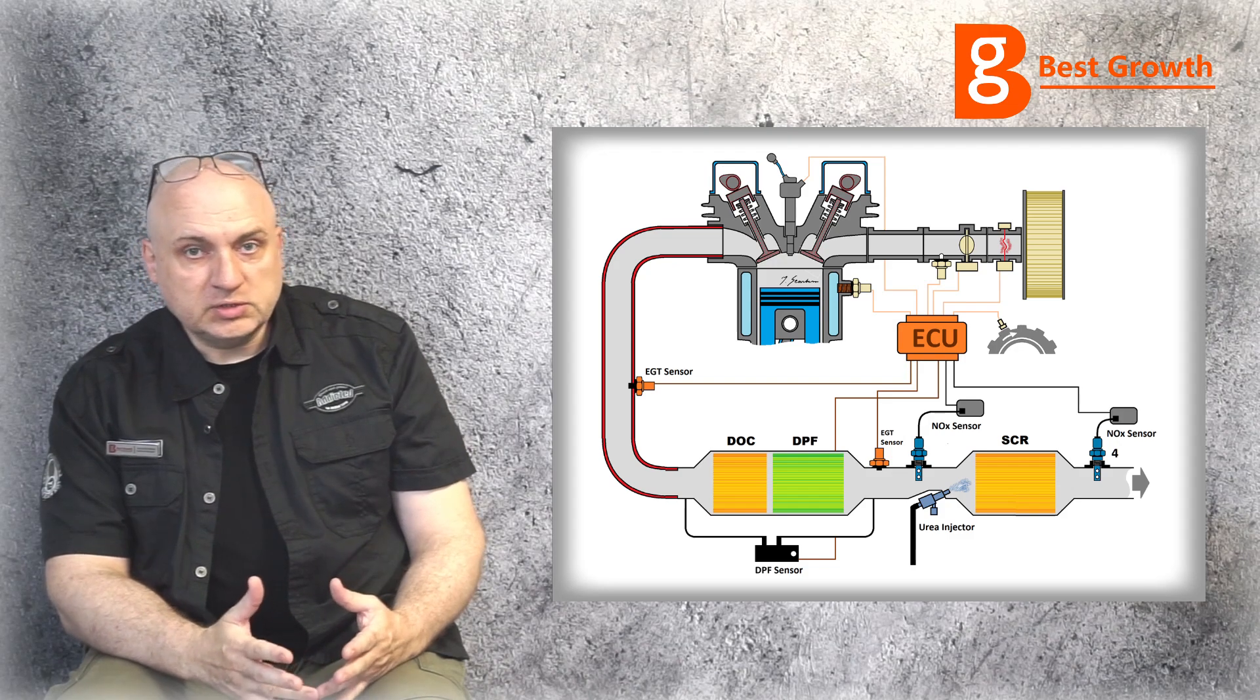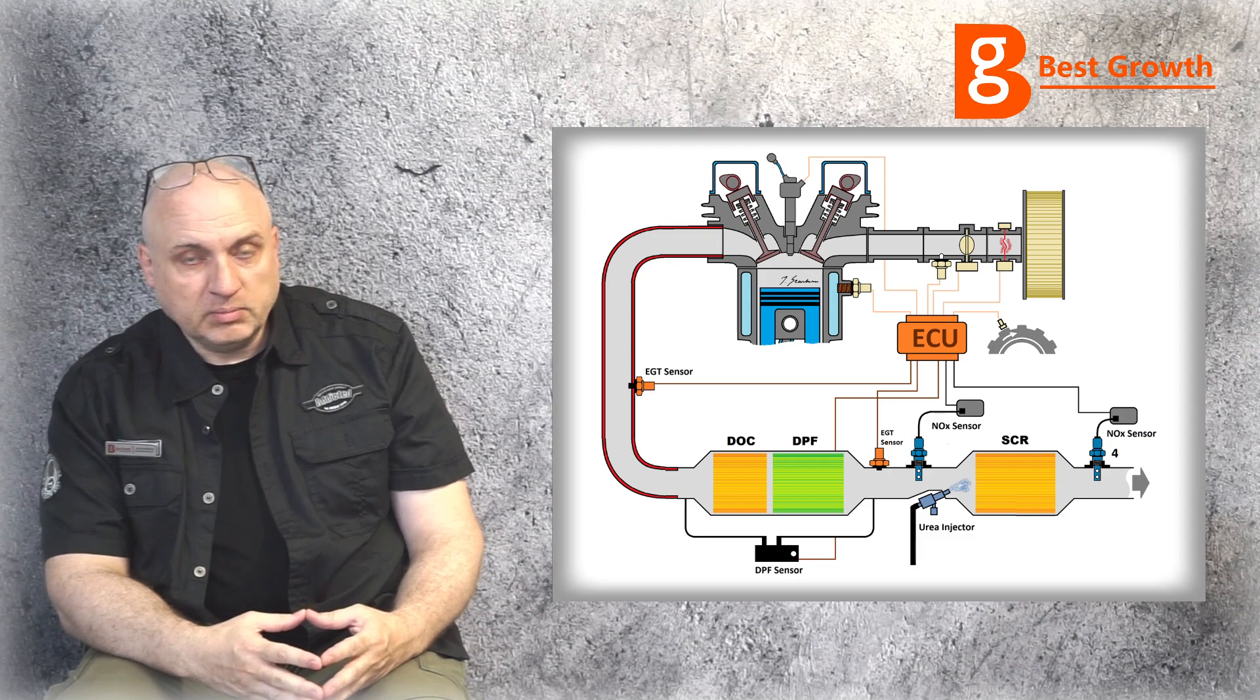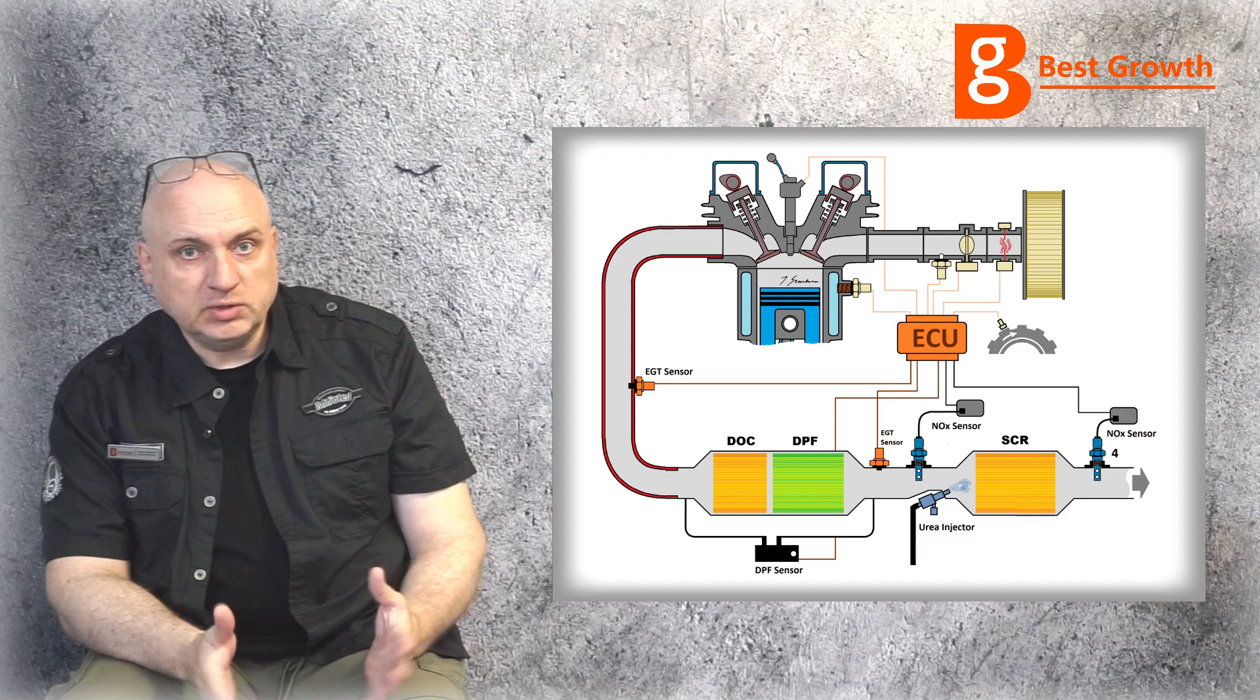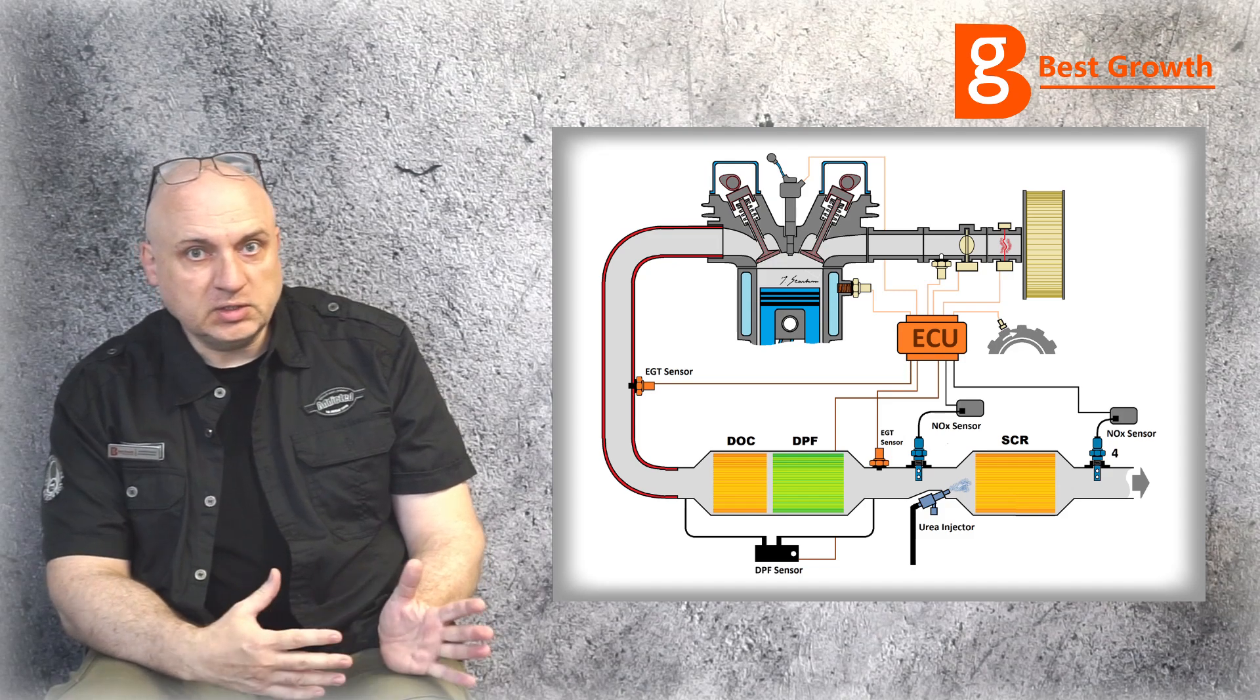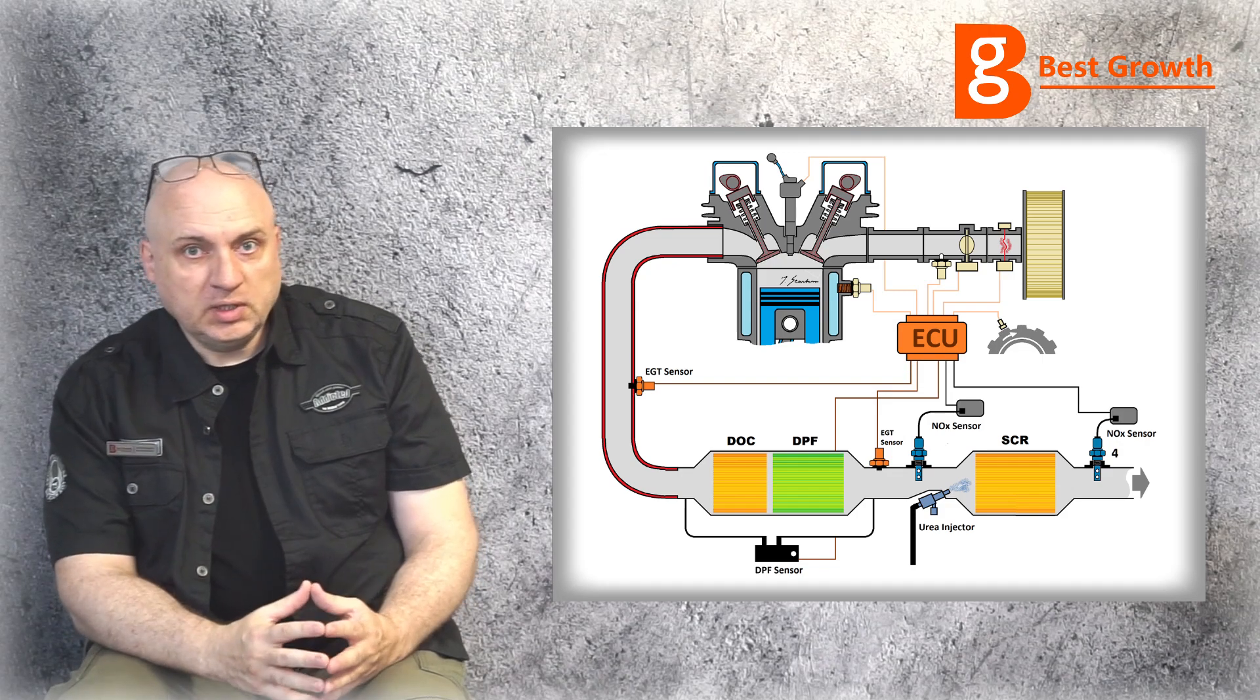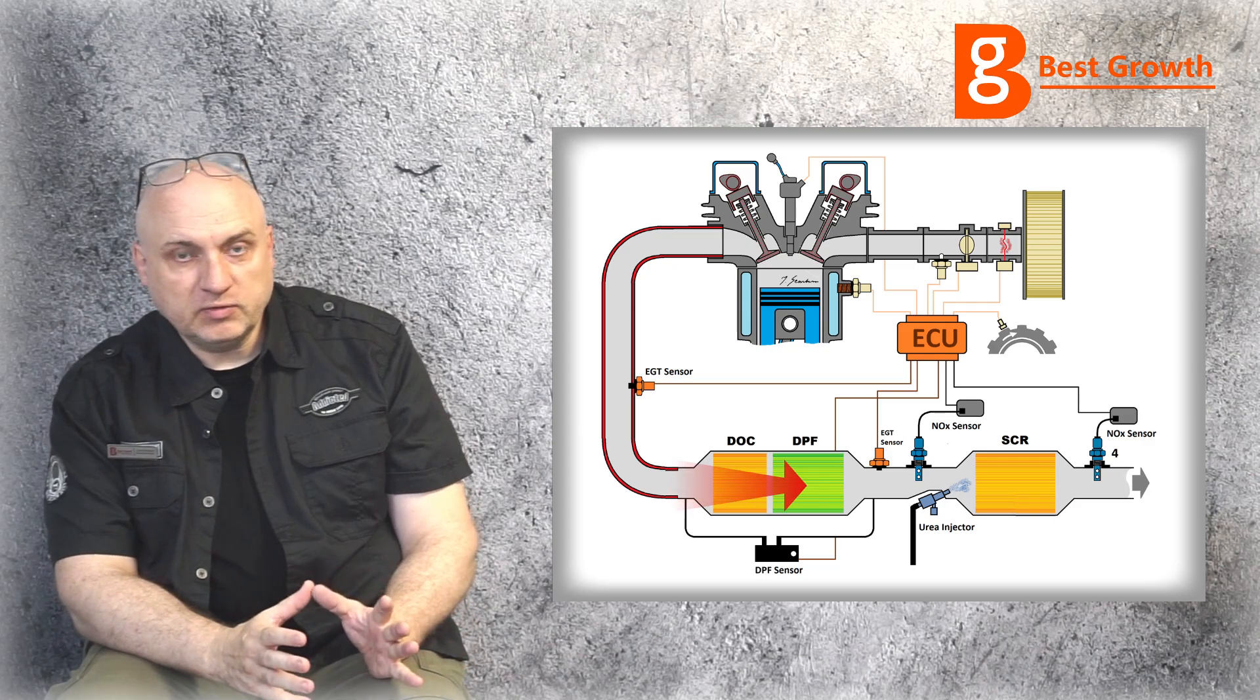The particles consist of soot and also unburned fuel, but in the form that was unable to be burned out in the DOC, in the diesel oxidation catalyst. So the soot and particles are captured inside the DPF filter.